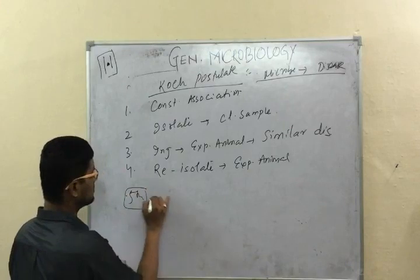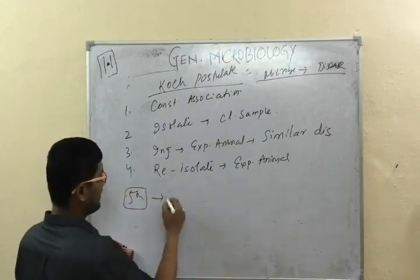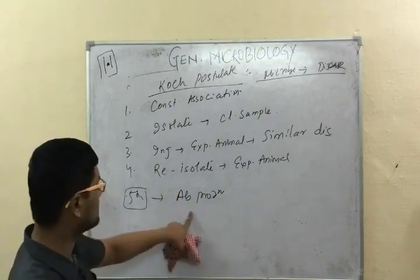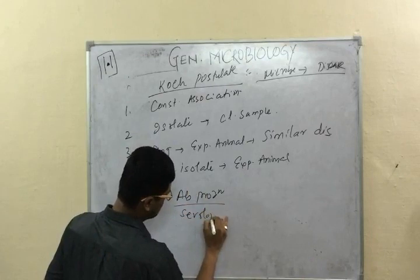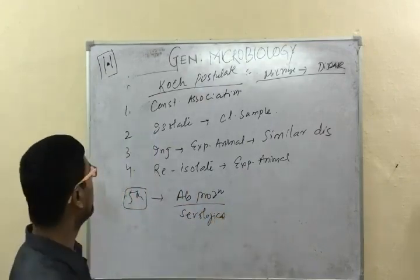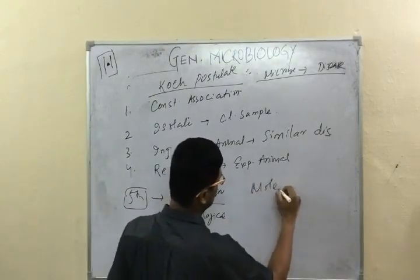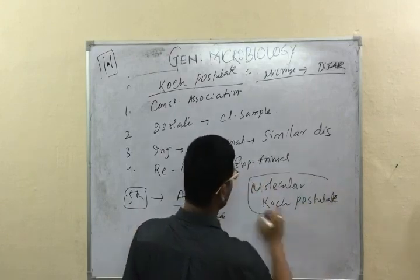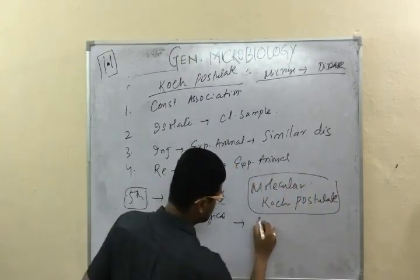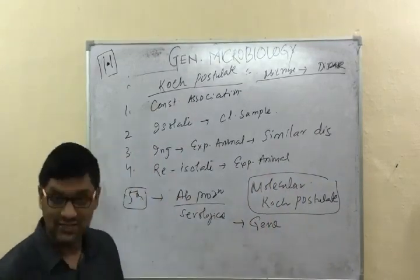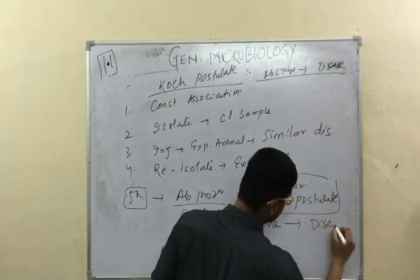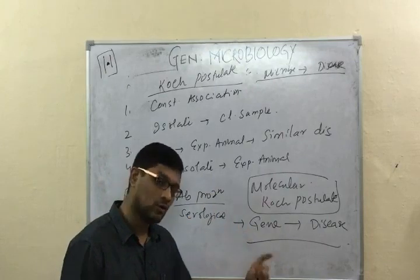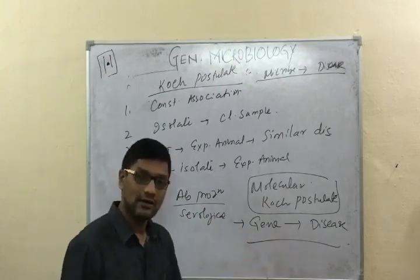Later on, a fifth criterion was introduced by Koch's followers: there should also be antibody production against the microbe, so serological response is the fifth criterion introduced later. Currently, the molecular Koch's postulate has also been laid down, according to which it is the virulence gene of the microbe, rather than the microbe per se, that should be constantly associated with the disease manifestation.